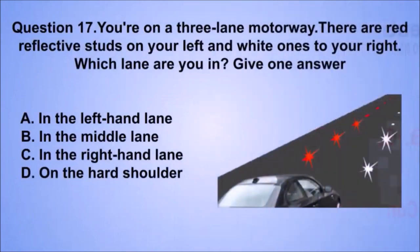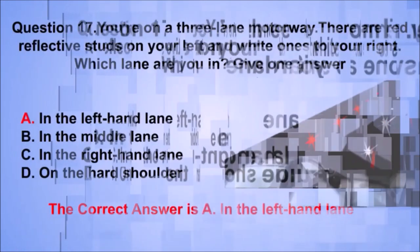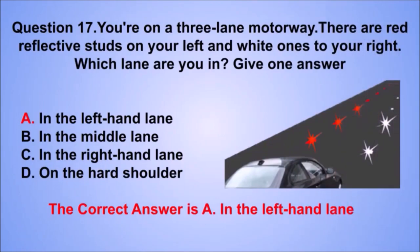Question 17. You're on a three-lane motorway. There are red reflective studs on your left and white ones to your right. Which lane are you in? The correct answer is A: In the left-hand lane.